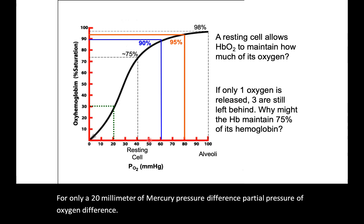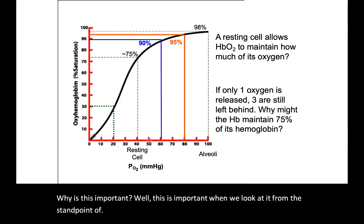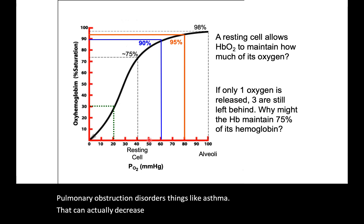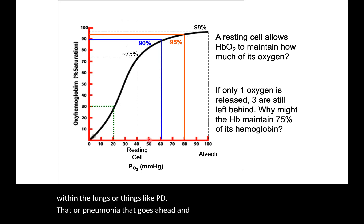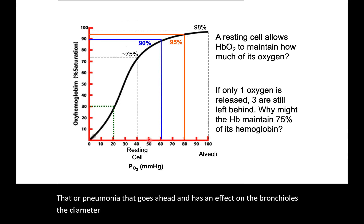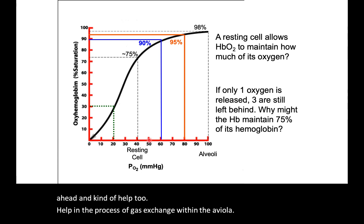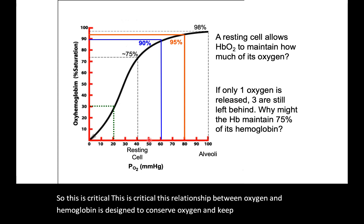Why is this important? This is critical when we look at pulmonary obstruction disorders like asthma, which can decrease the pressure beyond a blockage within the lungs, or conditions like COPD, or pneumonia that affects the bronchioles — their diameter — or the production of surfactant, which helps the process of gas exchange within the alveoli. This relationship between oxygen and hemoglobin is designed to conserve oxygen and keep it bound to hemoglobin.